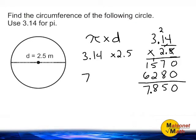So the circumference of this circle is equal to 7.85 meters. We can drop the zero at the end. 7.85 meters is really close to the number 8, so we could also say that the circumference or distance around our circle is a little bit less than 8 meters.